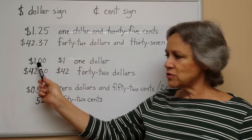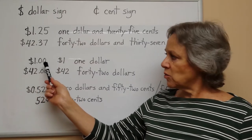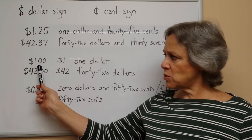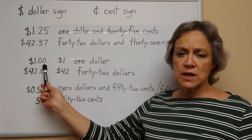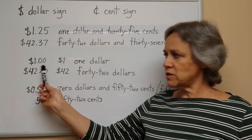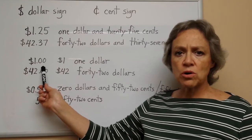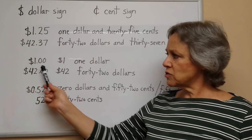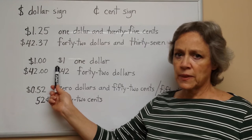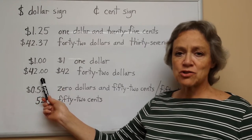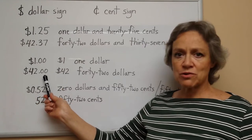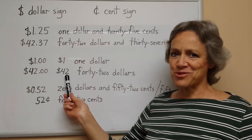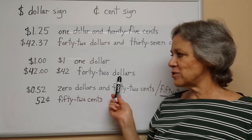If we have some dollars without any cents, we can write it either like this: the dollar sign, the number one, a decimal point, and zeros to represent the number of cents. So this is one dollar — or sometimes we drop those zeros and just write one dollar like this. So these two are the same. Another example: forty-two dollars showing the two zeros for the cents, or forty-two dollars without the zeros. Those are both read forty-two dollars.